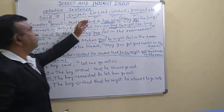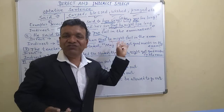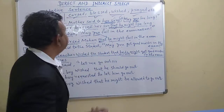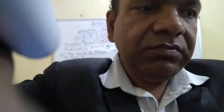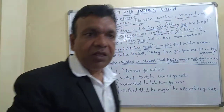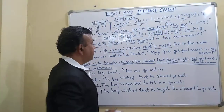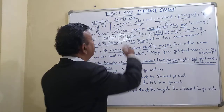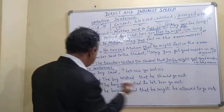So, my dear children, these are optative sentences and you have seen how to change them. You must have understood that 'said to' will be changed into 'cursed,' 'blessed,' 'wished,' or 'prayed,' depending on the context. Now let's see some other sentences.